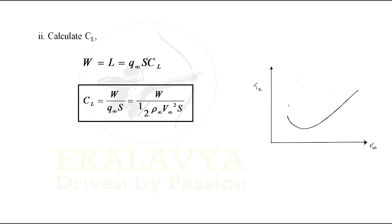From the above equation we generate the relation for calculating coefficient of lift Cl. Density rho infinity is known from a given altitude. Wing area S and weight W are known from aircraft data.